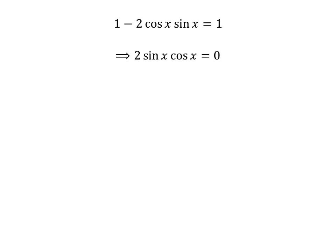Cancelling out 1 on both sides of the equation gives us 2 times sine of x times cosine of x is equal to 0, since minus of 0 is 0.